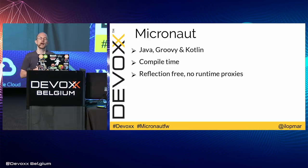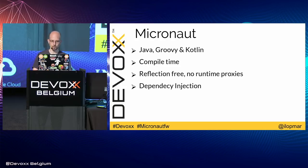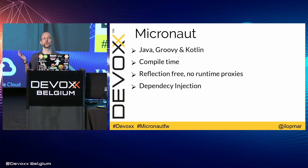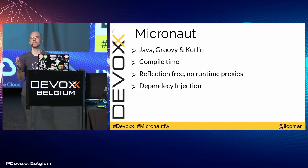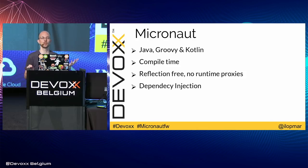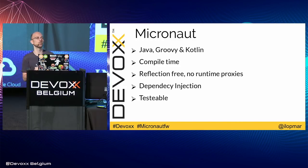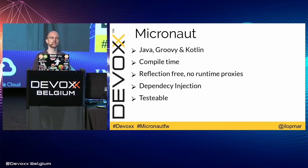We use an annotation processor for Java and Kotlin, and AST transformations for Groovy. We also have dependency injection. If you're a Grails or Spring developer, the dependency injection is exactly the same — you'll feel comfortable because it works the same way, just done at compilation time. We also wanted to make the framework really simple and easy to test — a test application should be really simple.